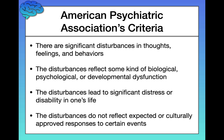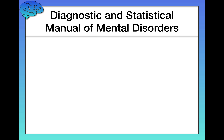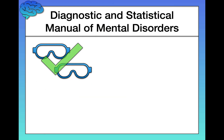Last but not least, I want to talk about the Diagnostic and Statistical Manual of Mental Disorders — the DSM — which is the most widely used way of classifying psychological disorders. It was created by the American Psychiatric Association and has gone through several revisions. As with any classification system, the DSM has its pros and cons. First, the DSM has good inter-rater reliability, meaning different clinicians tend to agree on the diagnosis of a patient when using these criteria — though that reliability is better for some disorders than others.